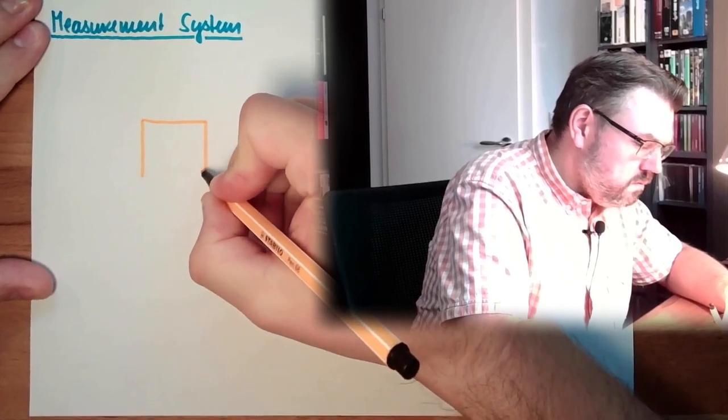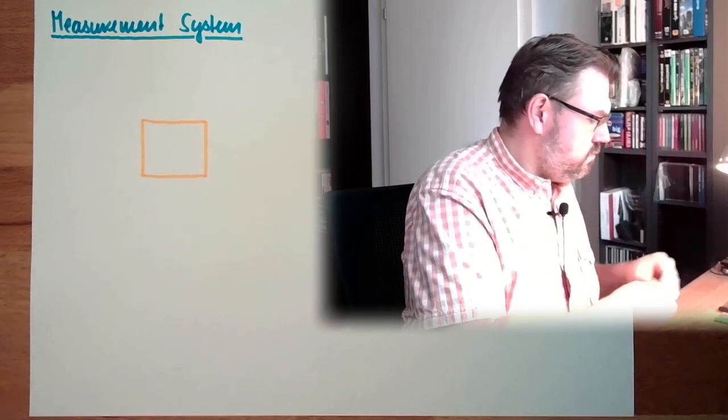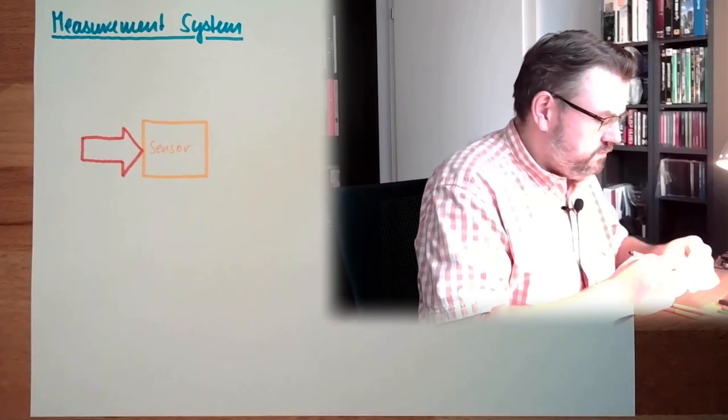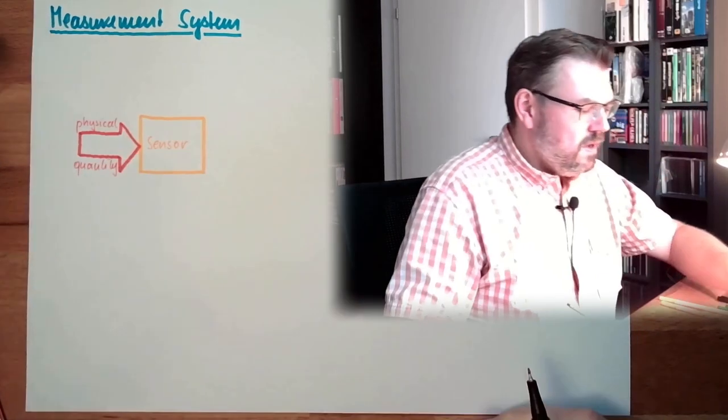Now how is a measurement system looking? What is the structure of a measurement system? The base, the core of the measurement system is the so-called sensor. We have somewhere something — this is the sensor. Our physical quantity, the thing we want to measure, will influence the sensor somehow. So this here is the physical quantity, and this is influencing the sensor.